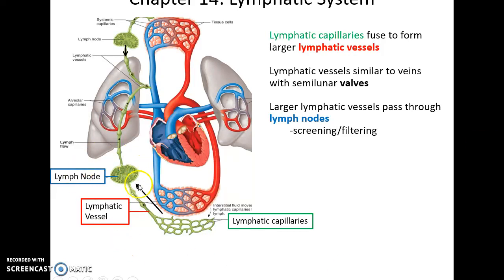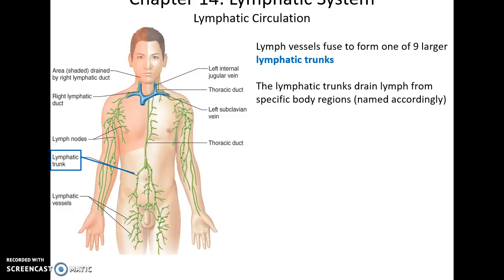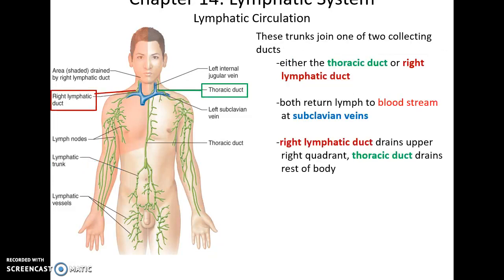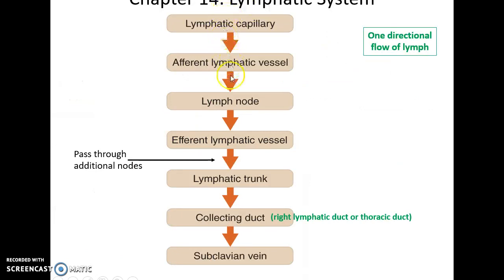Lymphatic vessels pass through structures called lymph nodes, where the lymph fluid is filtered and screened for any pathogens. The lymph vessels eventually fuse into one of nine large lymphatic trunks draining different regions of the body. Those trunks fuse to form either the thoracic duct, draining three-fourths of the body, or the right lymphatic duct, which drains the upper right quadrant. Both ducts empty the lymph fluid into the subclavian veins, returning it to the cardiovascular system. Lymph capillaries carry fluid to afferent lymphatic vessels, which go through lymph nodes, then exit via efferent lymphatic vessels, passing through many lymph nodes until eventually fusing into lymphatic trunks, then the collecting ducts, and finally the subclavian vein.